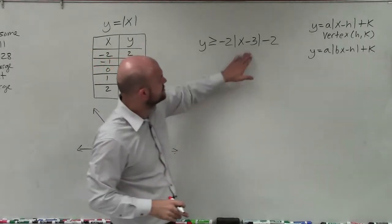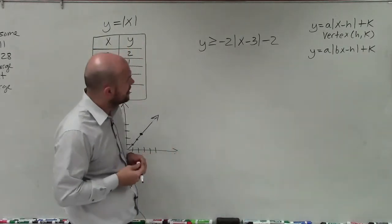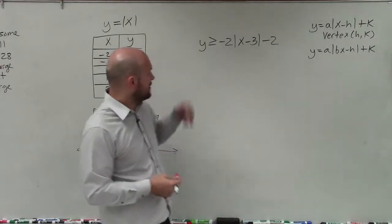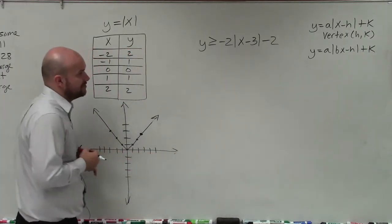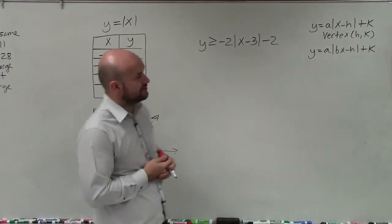Welcome, ladies and gentlemen. So what I'd like to do is show you how to graph this absolute value inequality. And basically what we have is y is greater or equal to negative 2 times the absolute value of x minus 3 minus 2.